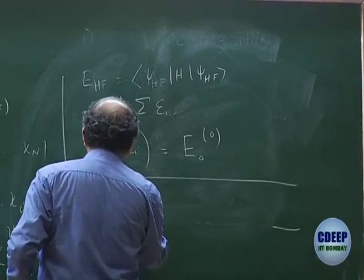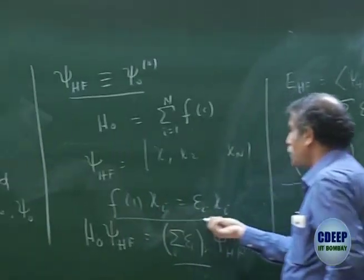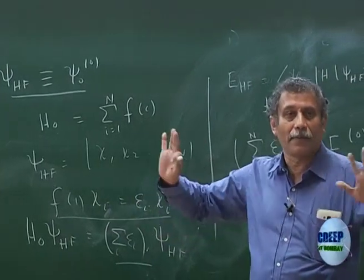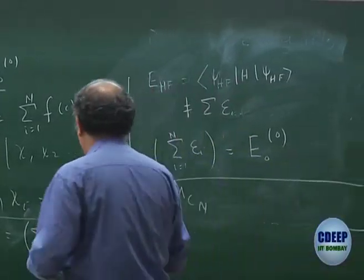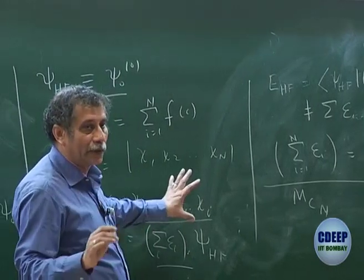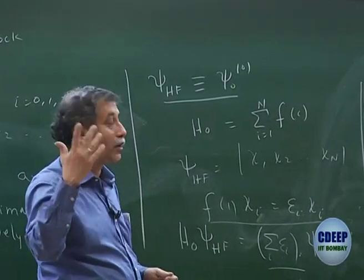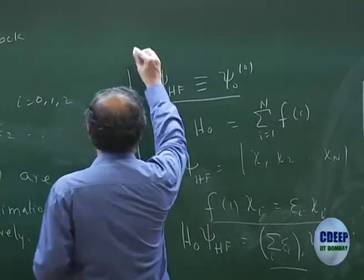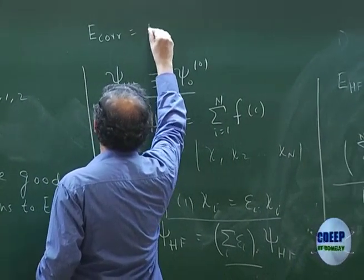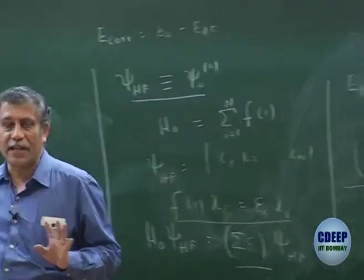So I have MCN determinants. Please note that the Hartree-Fock has been solved in some basis — M number of spin orbitals. The actual Hartree-Fock would require infinity of solutions, so everything we are talking about is actually in a basis. Yesterday I mentioned correlation energy as E₀ − E_HF or E_HF − E₀ depending on your sign convention.